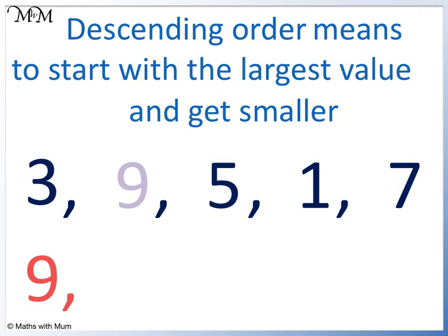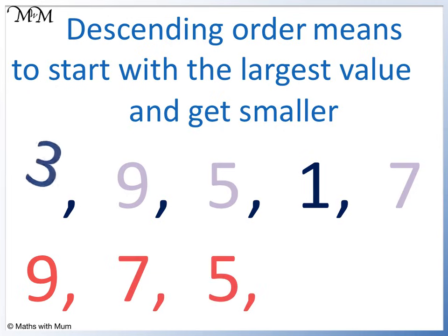We look for the next biggest number. This is 7. Then we have 5. Then 3. Then 1. The numbers are written in descending order.